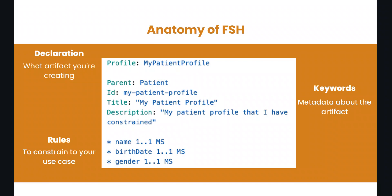So what does FHIR Shorthand actually look like? On the screen here is the anatomy of a very basic FSH file. It has three key components. The first is a declaration, where you describe the artifact you're creating — in this case, a profile called My Patient Profile. The second is a set of keywords, which is metadata about the artifact. Keywords depend on the artifact type, so profiles, value sets, code systems, and extensions each have different keywords. The third and most important section is the rules, which are used to constrain the artifact to your use case. In this screenshot, there are three rules constraining name, birth date, and gender for a patient and making them required.